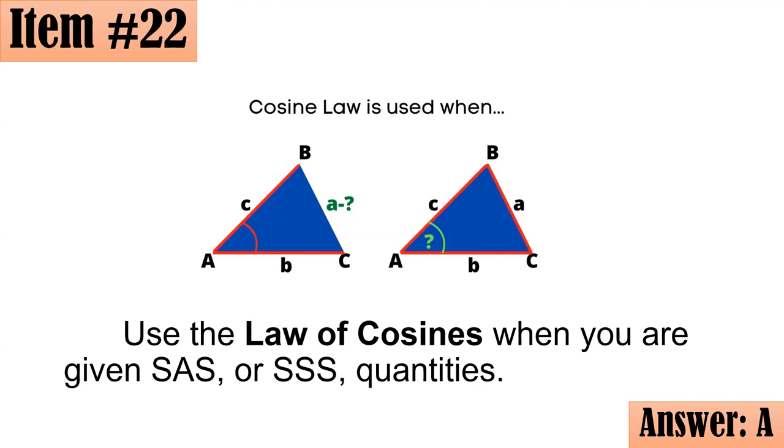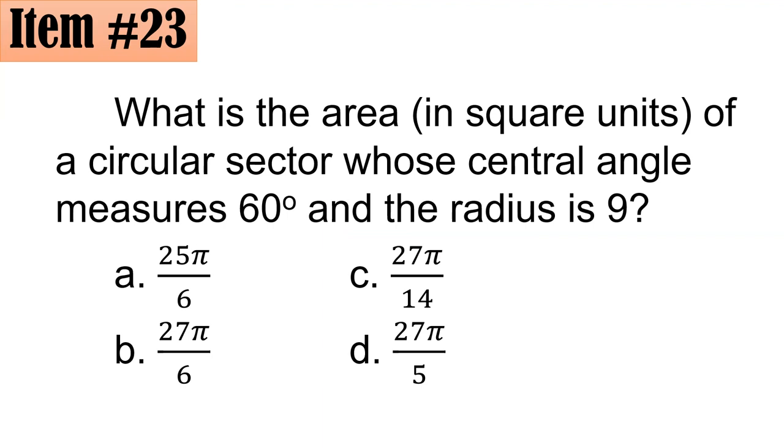Number 23. What is the area in square units of a circular sector whose central angle measures 60 degrees and the radius is 9? Is it A, 25 pi over 6, B, 27 pi over 6, C, 27 pi over 14, or D, 27 pi over 5? Letter E daw. 27 pi over 2 daw.